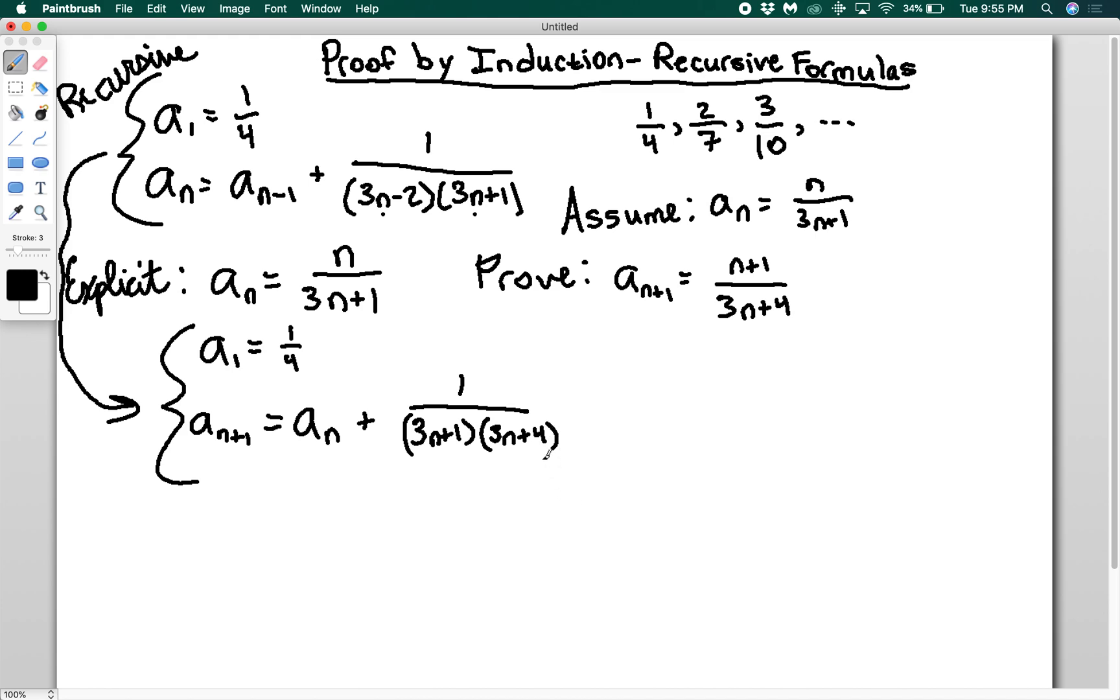Now I'm going to have an easier time. I'm assuming this statement is true, so I can plug it in here. I'm going to have n/(3n+1) + 1/((3n+1)(3n+4)). If I can add these together and show it equals what I'm trying to prove, we're all set.